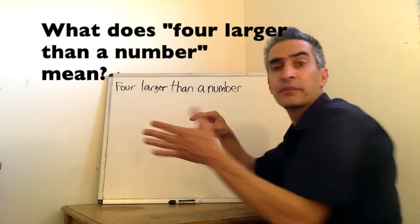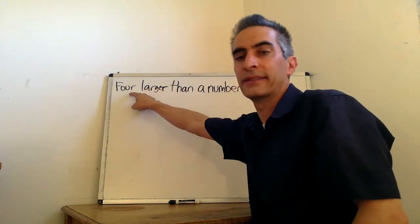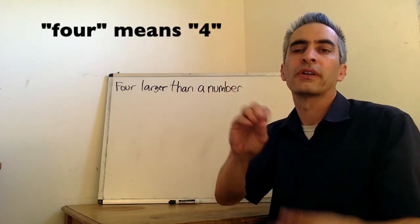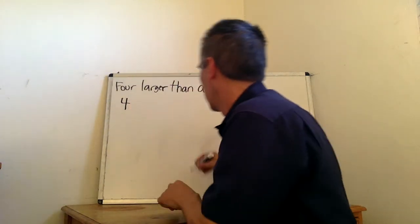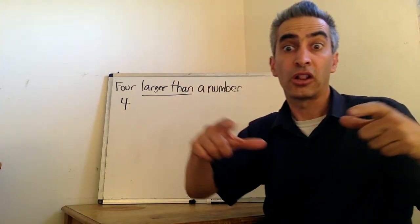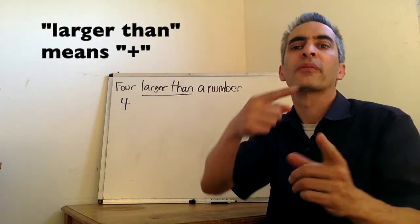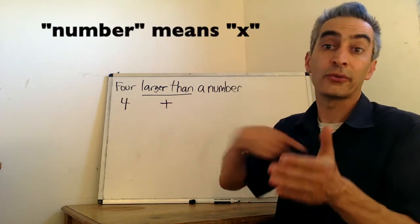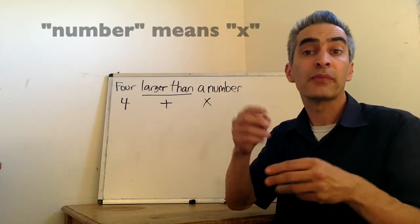Another example. What does this expression mean? Again, we're going to start right here, with this word right here. This word means four. The number four, right. These two words, larger than. Well, what does larger than mean? Well, it means plus. And again, we see the word number here, which we're going to name x.